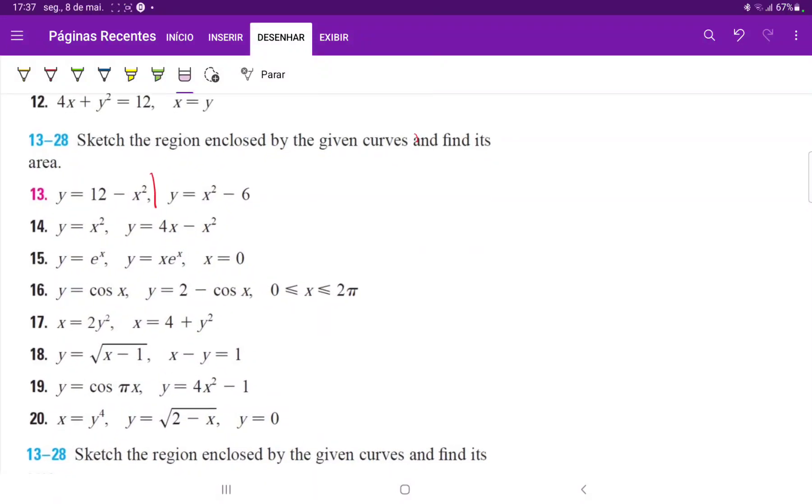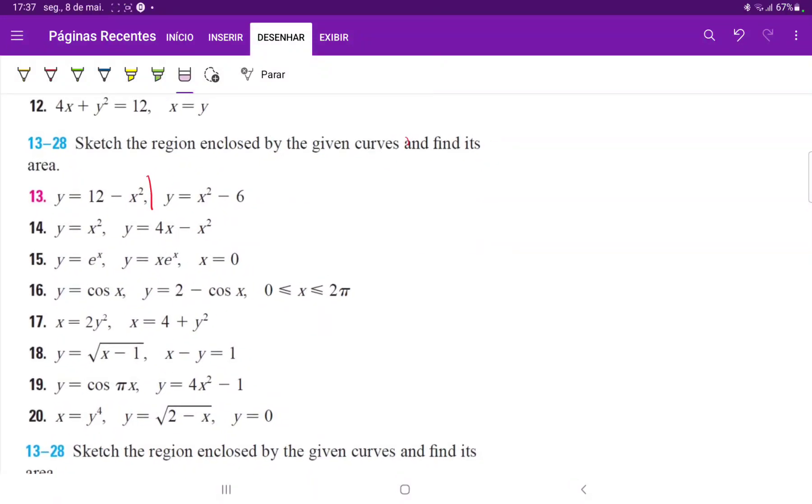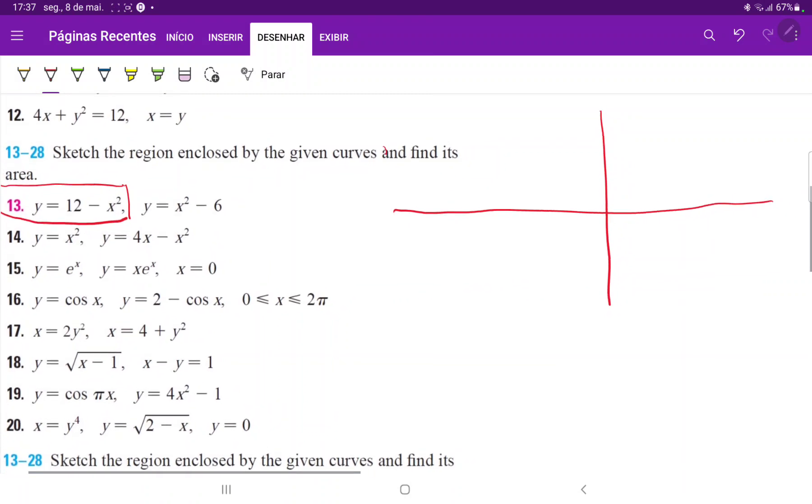For number 13 we have to sketch the curves and then find the area between them. So we will begin with this curve over here. Now this is just a parabola that opens downwards and it has been shifted upwards by 12. So if this is a little foreign to you, you should go review the graphic transformations.